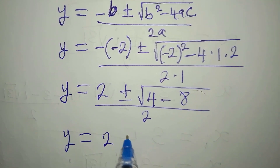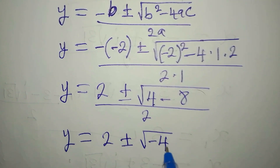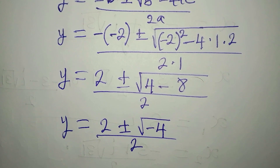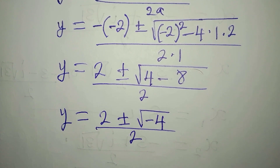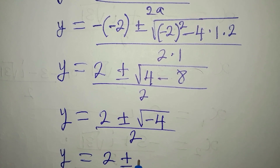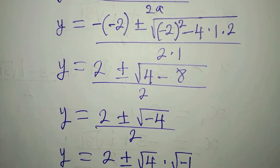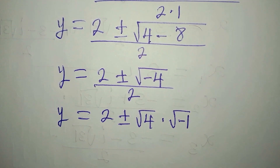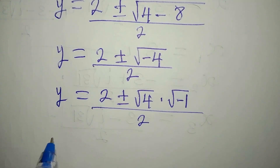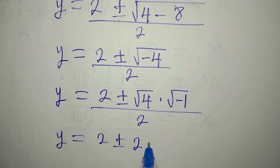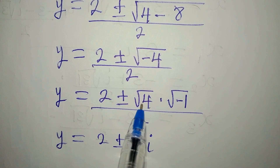Because we have a negative under the square root, the solution is going to be a complex solution. We write y equals 2 plus or minus square root of 4 times square root of negative 1, divided by 2. The square root of 4 is 2, and the square root of negative 1 is i, so multiplying gives 2i. So we have 2 plus or minus 2i, divided by 2.